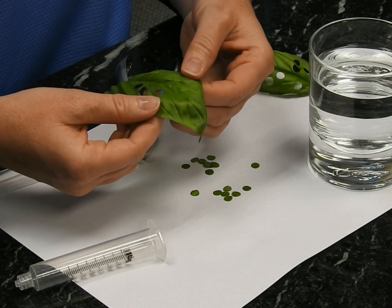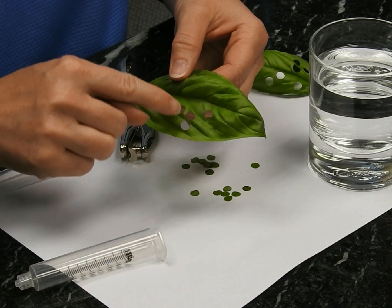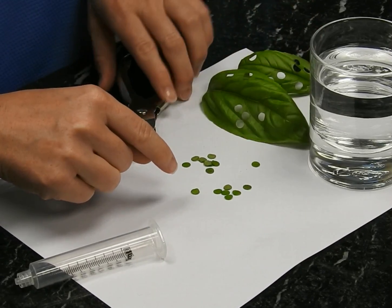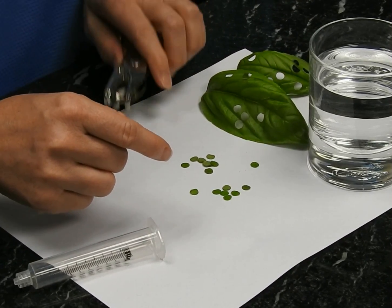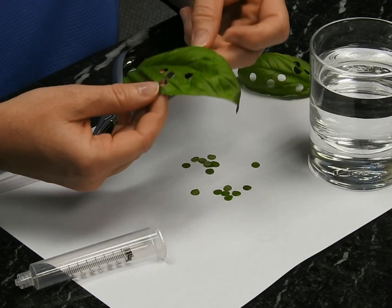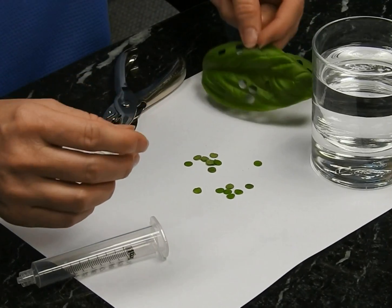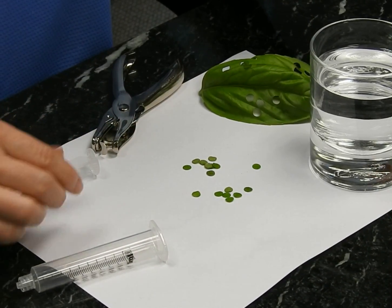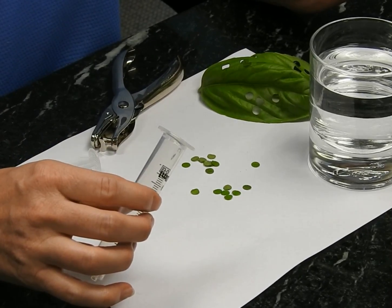What I've already done here is cut several leaf disks using my hole puncher and these leaves of basil. They're actually quite fresh and they smell lovely. Too bad we don't have smell-o-vision.